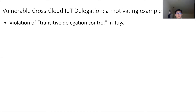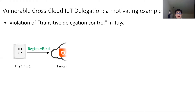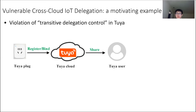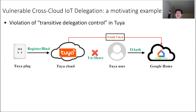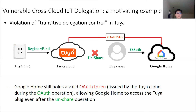For example, we found the delegation in the Tuya cloud is vulnerable, which actually motivated our study. Specifically, Tuya allows the administrator — the device owner — to share device access with other users. Tuya also allows the delegatee user to further delegate access to Google Home by issuing an OAuth token to Google Home. However, we found that after the device owner revokes the delegatee user's access right in the Tuya cloud, the delegatee user can still use the Google Home app to control the device, which they are no longer entitled to access. This is because the OAuth token issued to Google Home is still valid, which clearly violates the transitive delegation control.